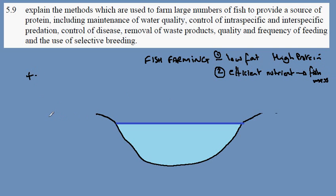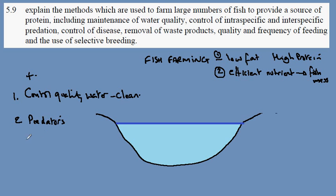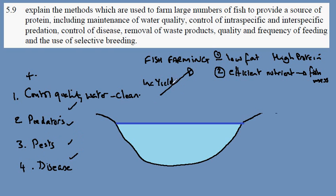On the plus side, fish farming allows us to control the quality of water, which of course we would like to be clean. The second thing is that we can control predators. The third thing is that we can reduce pests and other forms of disease. By controlling all these factors, we contribute to an increase in yield of fish.